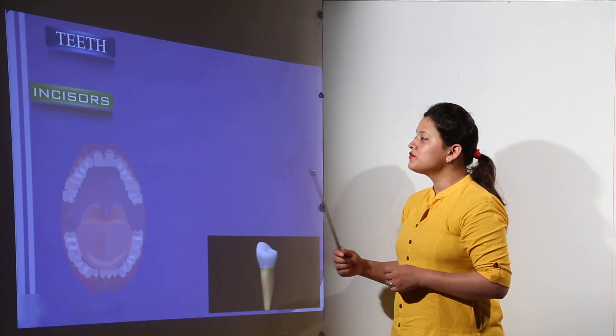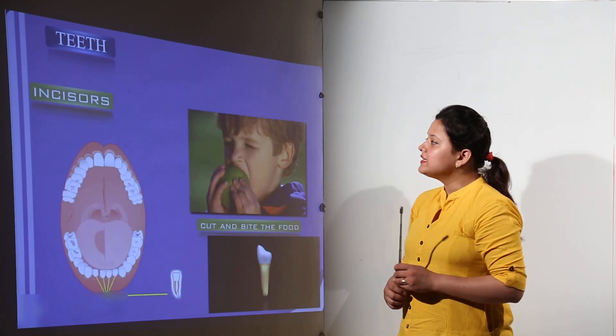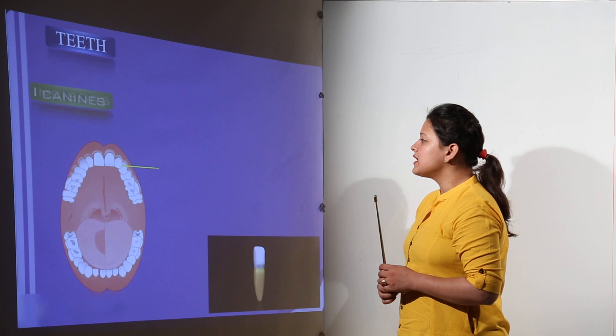So there are four groups of teeth. The first one are the incisors. These are helping to cut and bite the food.